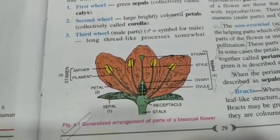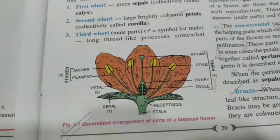The flower is the sexual organ of plants. It is usually the most beautiful and conspicuous part of a plant, which is easily visible. It is actually a specialized shoot in which the leaves are modified into floral structures. Let's study the various parts of a bisexual flower.